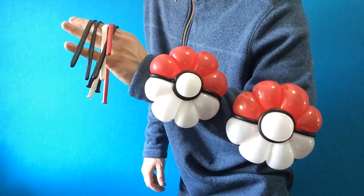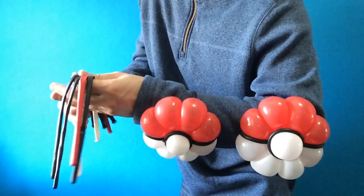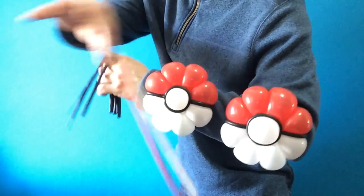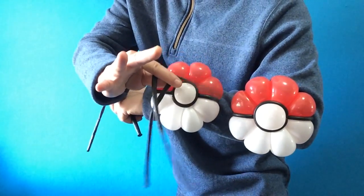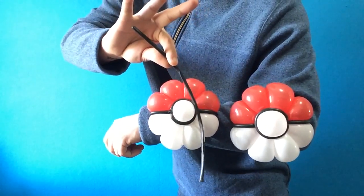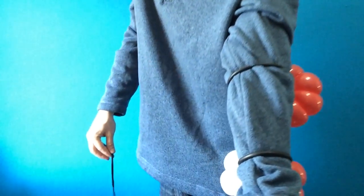All you need are a few size 260 twisting balloons: red and white for the ball, two onyx black for the trim, and a final black 260 works as the wristband.